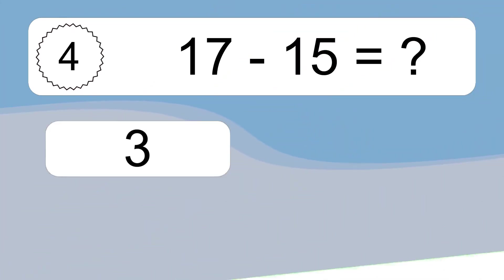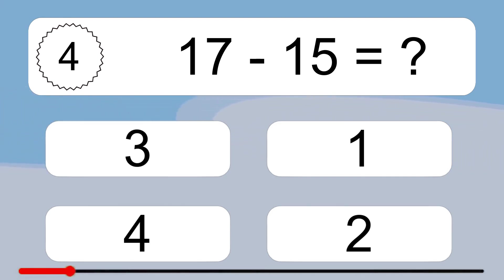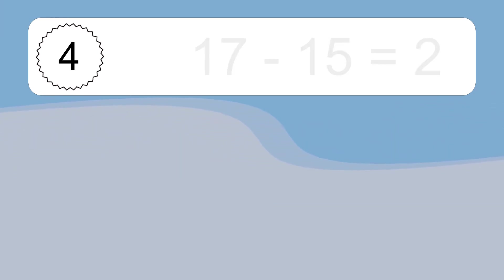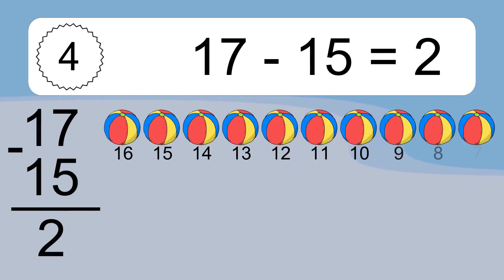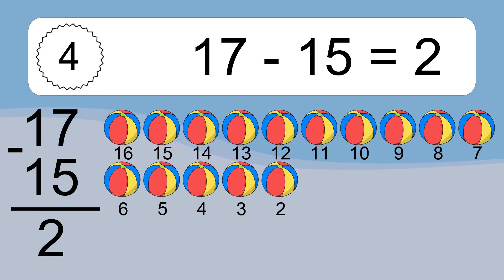17 minus 15 equals what? 17 minus 15 equals 2. Let's count it: 16, 15, 14, 13, 12, 11, 10, 9, 8, 7, 6, 5, 4, 3, 2.